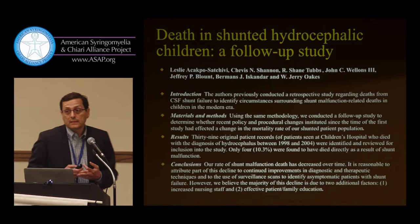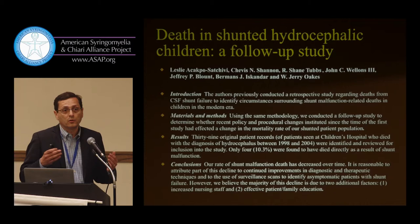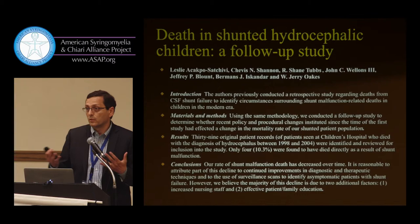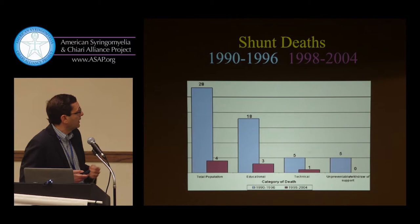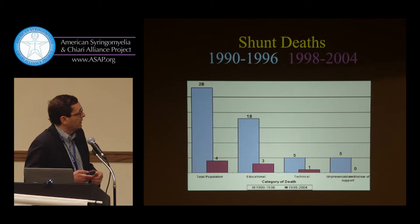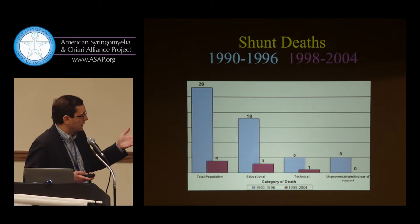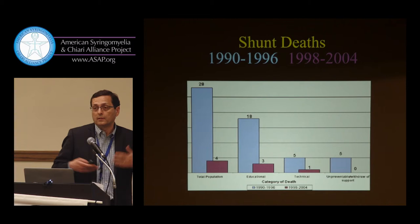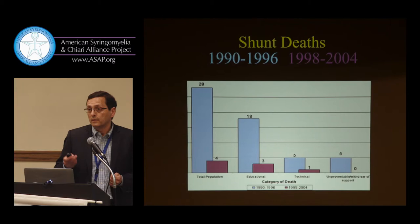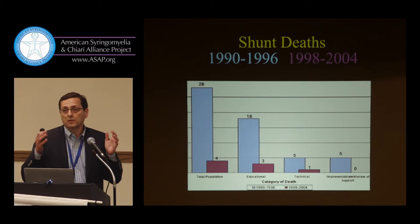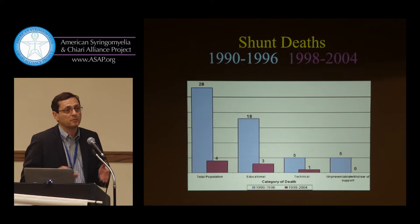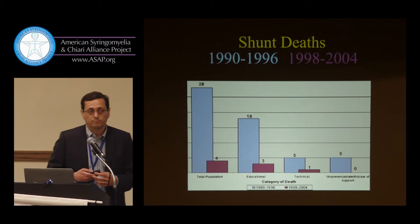Six years later, the same group looked at follow-up to see what kind of deaths there were, and there were only four. They found that there wasn't a lot of difference in technical problems or in the amount of support families had at home. The difference was in education of those families — by putting nurse practitioners on the phone to take calls from these families anytime they had a problem or a question. This is what saved all those lives.